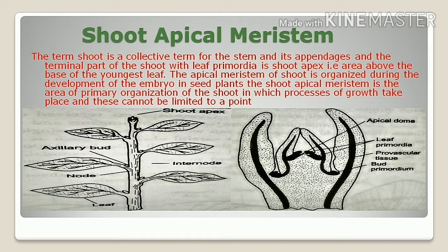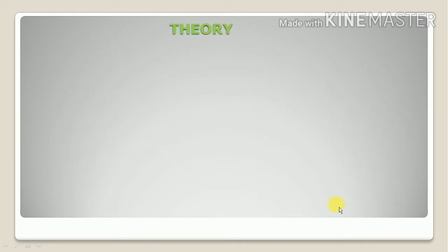The apical meristem may be dome-like, conical, flat, or even concave. These processes cannot be limited to a point. The cells of this area are thin-walled with dense cytoplasm and lack vacuoles.